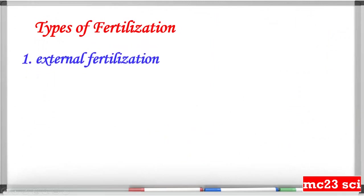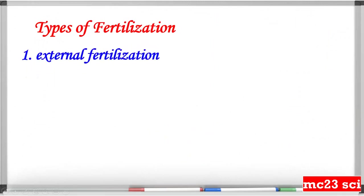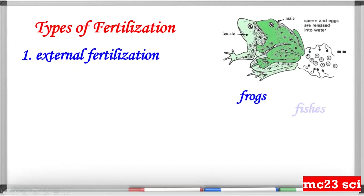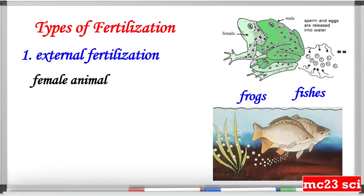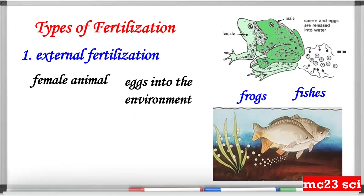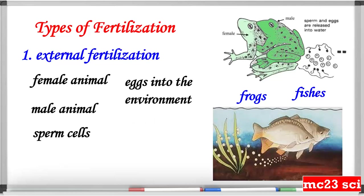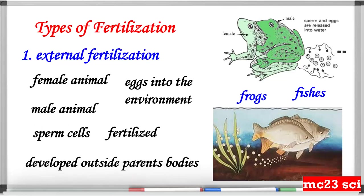There are two types of fertilization. One is external fertilization, as in frogs and fishes, wherein the female animal lays eggs into the environment and the male animal releases sperm cells to fertilize the eggs. The fertilized egg develops outside the parent's body.